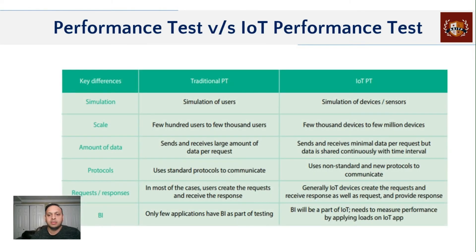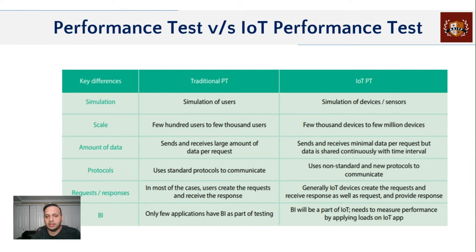A key difference is simulation. In regular performance testing you think in terms of concurrent users. In IoT, you think in terms of how many devices and sensors are involved. For scaling, traditional testing typically covers a few hundred to a few thousand users on a website or application.